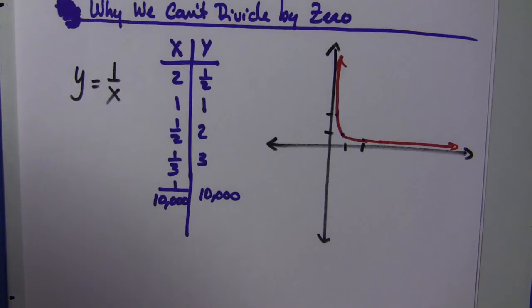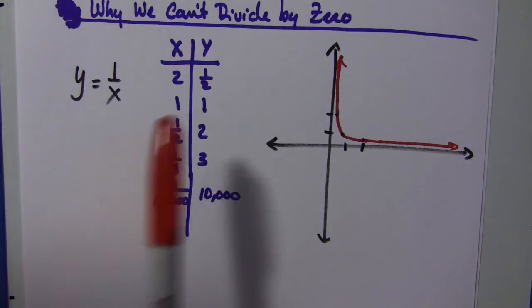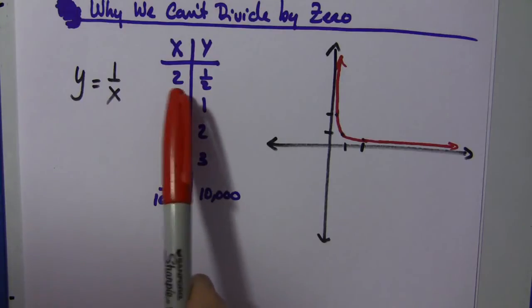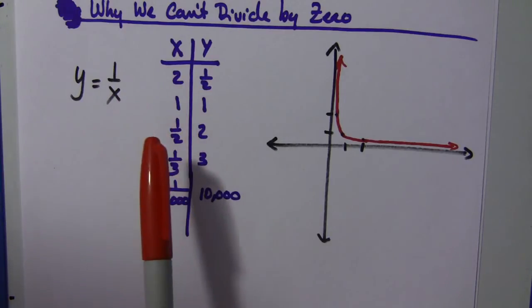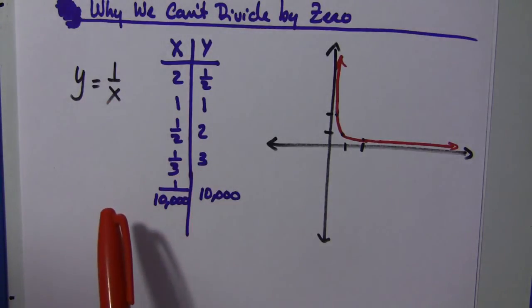Why can't we divide by zero? Well, let's take the equation 1 over x, where you might eventually think we would be divided by zero. And let's make an xy table here with values. When x is 2, y is a half. When x is 1, y is 1. When x is a half, y is 2. When x is a third, y is 3.